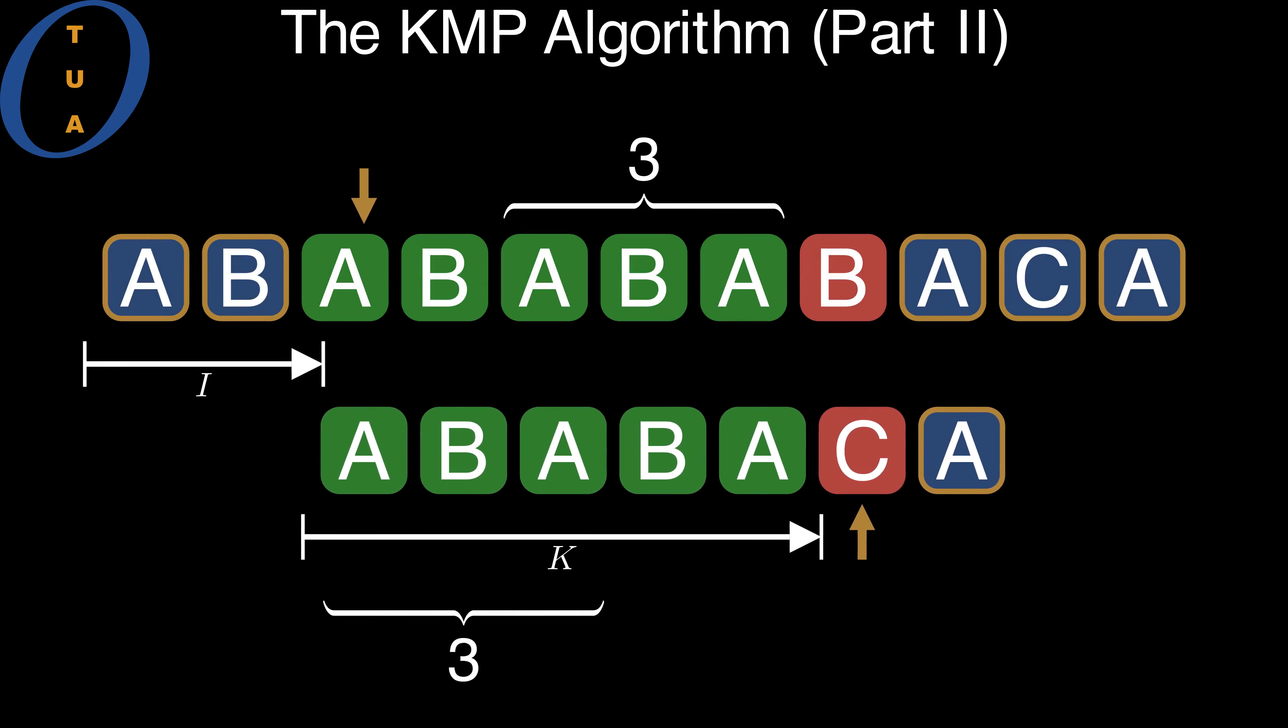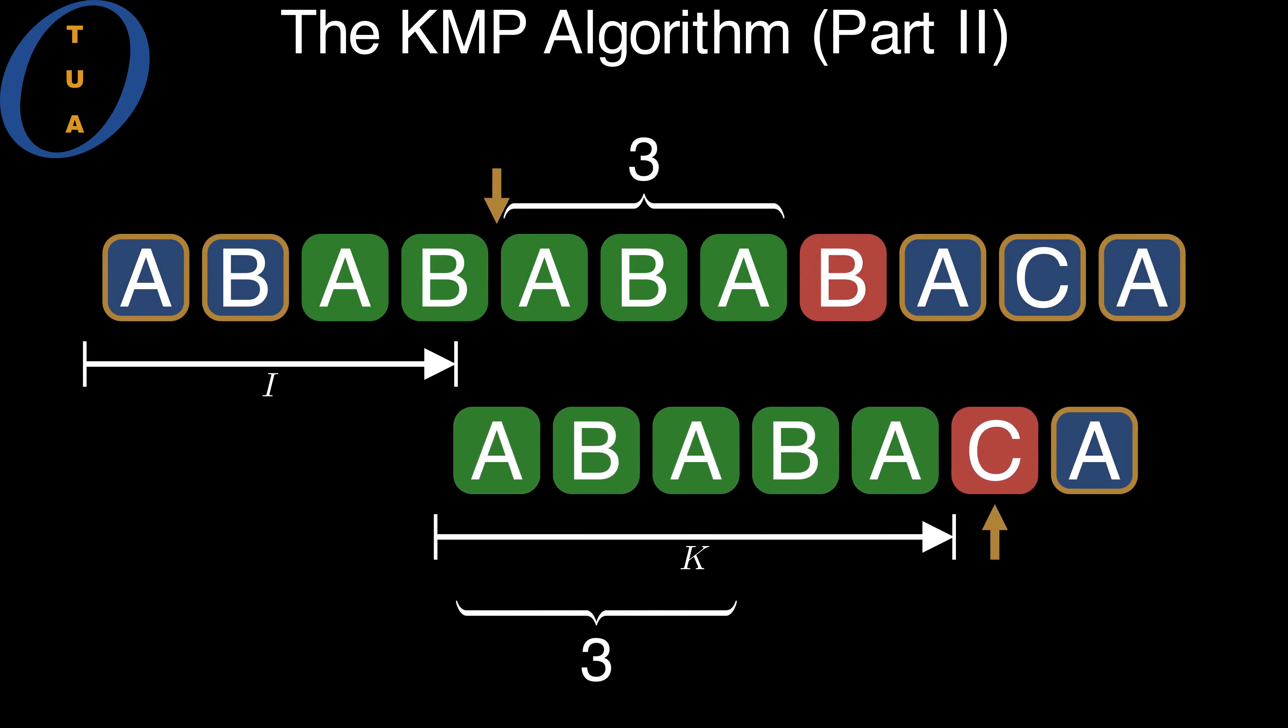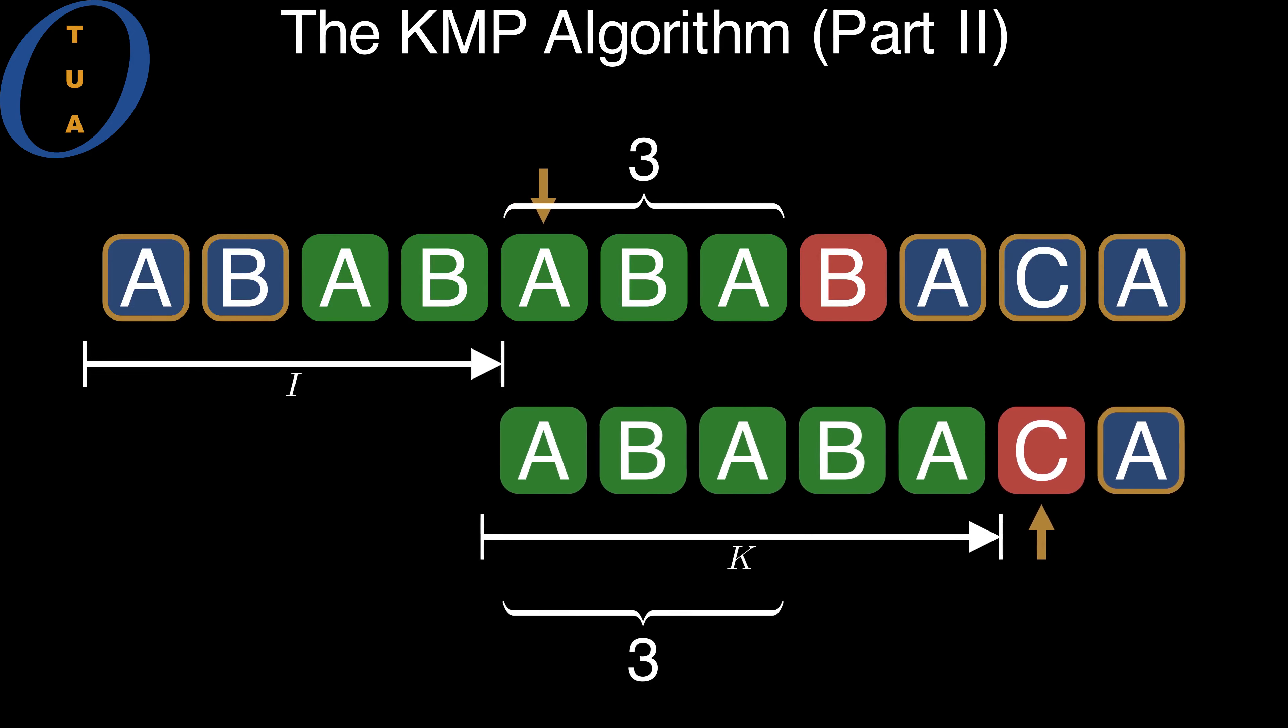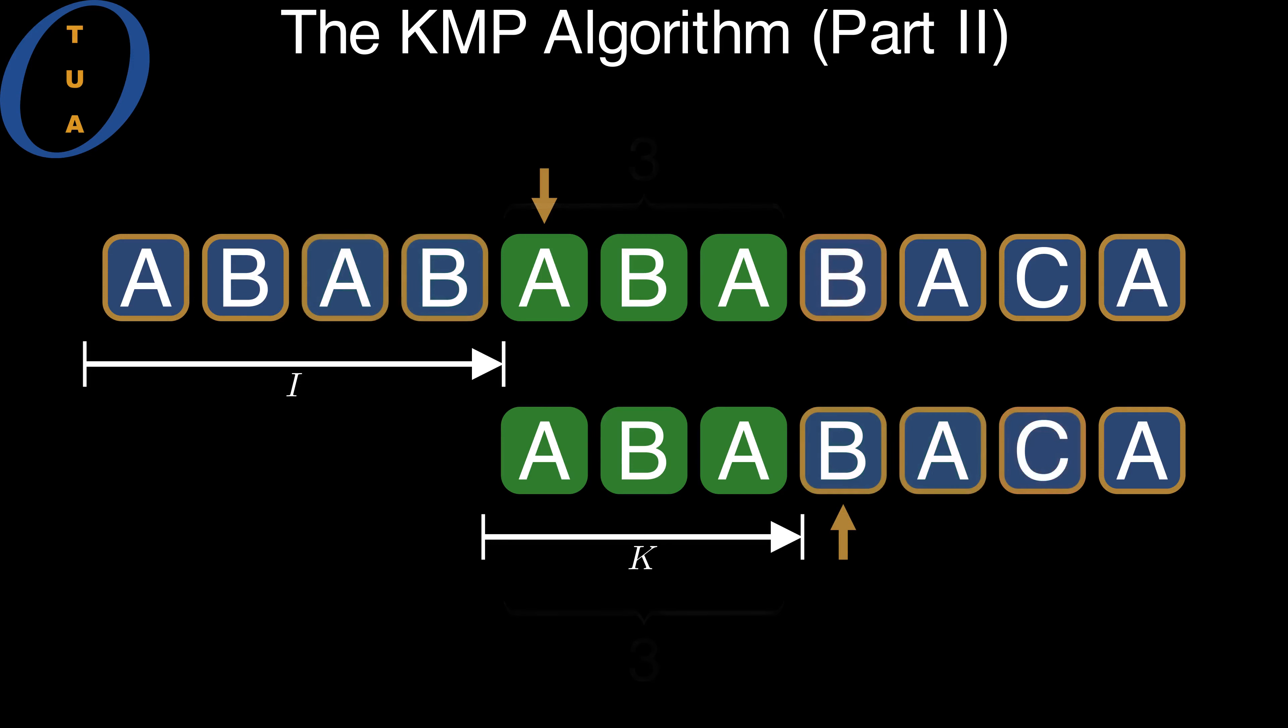We increase the index I by K-L to align the two instances of the border, and we update K to L. These changes effectively transform the old border into the next overlap.